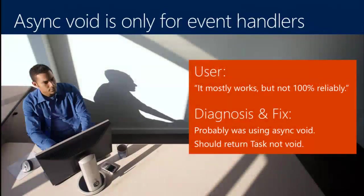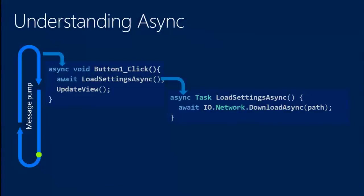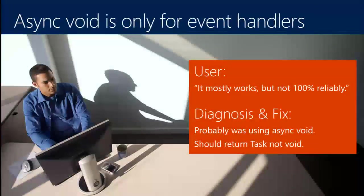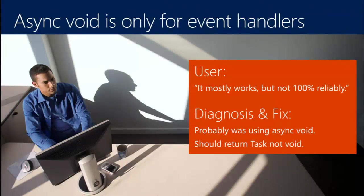That was a quick tour of what happens under the covers. There were two different kinds of methods — the async void method and the async task helper method. When do you write async void methods, and when do you write async task methods? That's one of the more common questions we get, and probably the top point of confusion we want to address.